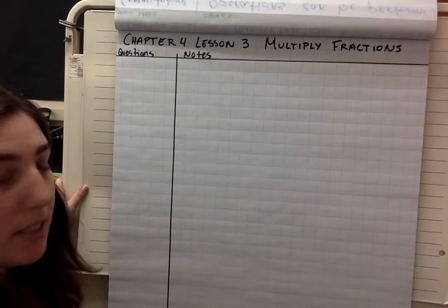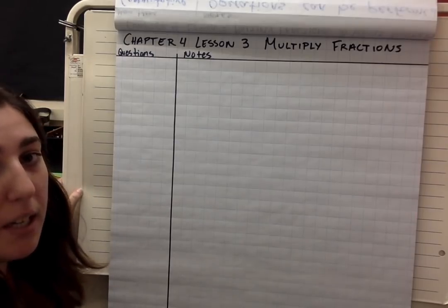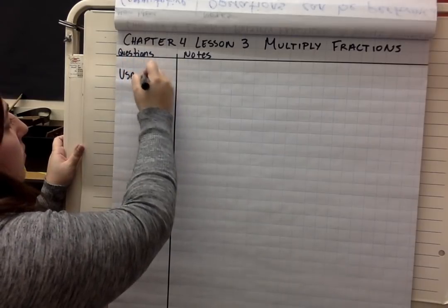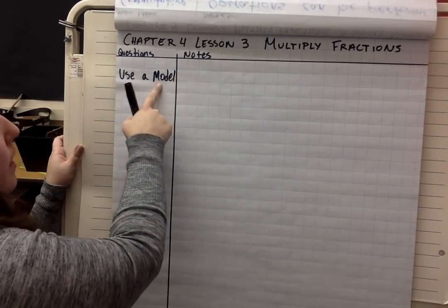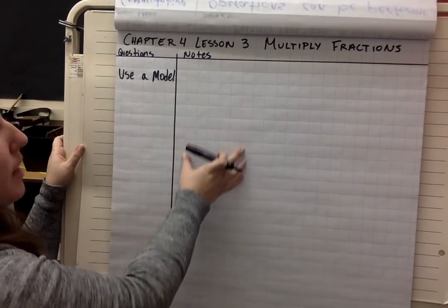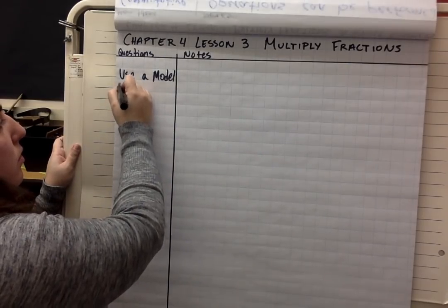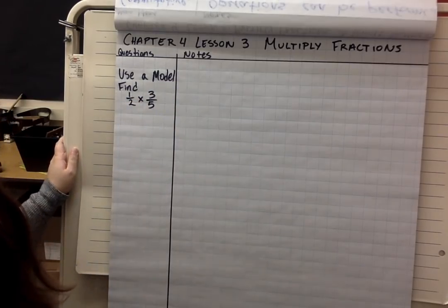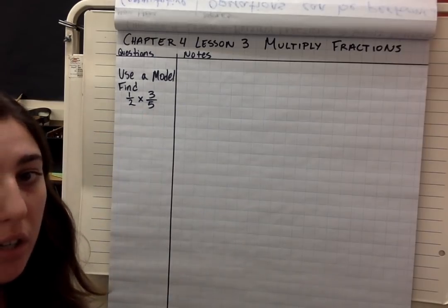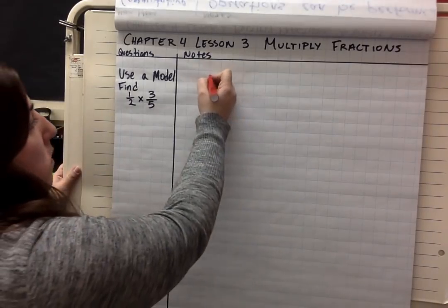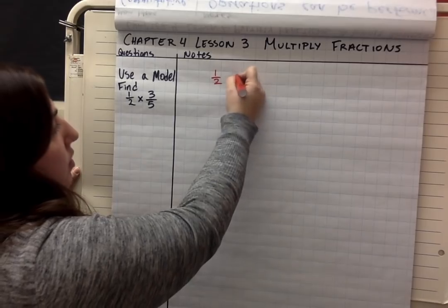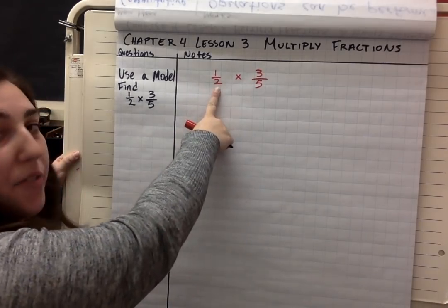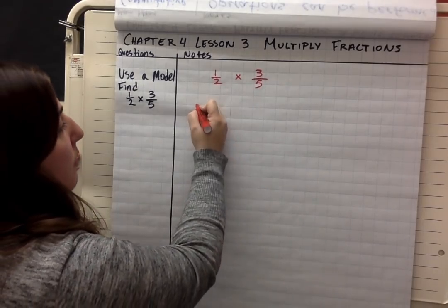Let's start with our first example. This is going to look really familiar and may be pretty easy for some of you. We're going to start with an area model. Make sure your notes look exactly like mine — you should have your questions column and the notes column. We're going to find 1 half times 3 fifths, multiplying this fraction times this fraction, and we're going to use an area model to do it. I'm going to draw a couple of area models — first to show what 1 half looks like and then what 3 fifths looks like, using brownie pans.